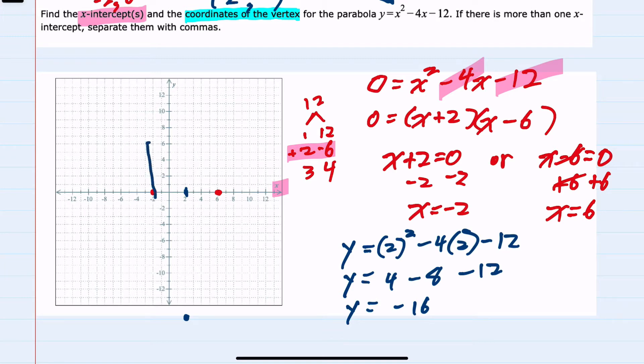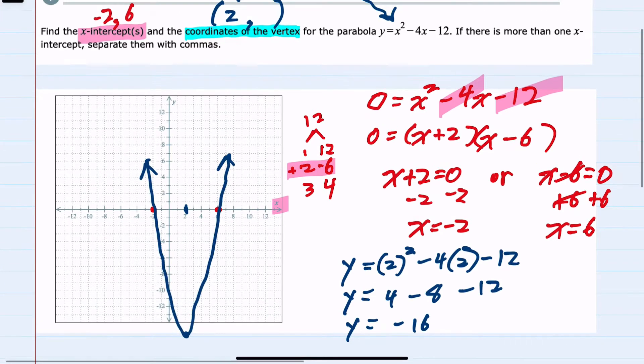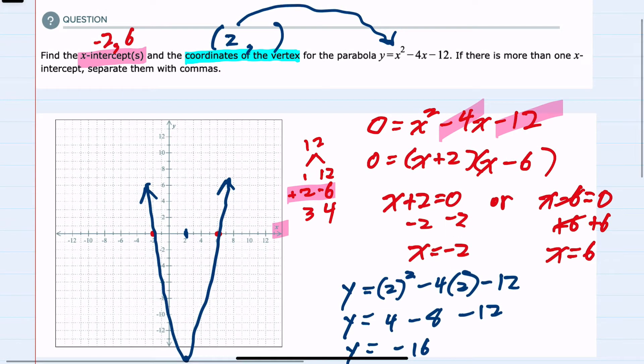We weren't asked to graph, but it would have this sort of shape, where the coordinate of the vertex is 2, negative 16, and with the two intercepts we found earlier.